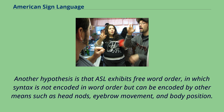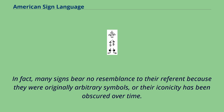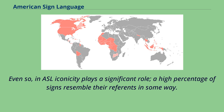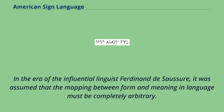Common misconceptions are that signs are iconically self-explanatory, that they are a transparent imitation of what they mean, or even that they are pantomime. In fact, many signs bear no resemblance to their referent because they were originally arbitrary symbols, or their iconicity has been obscured over time. Even so, in ASL iconicity plays a significant role, and a high percentage of signs resemble their reference in some way. That may be because the medium of sign — three-dimensional space — naturally allows more iconicity than oral language.